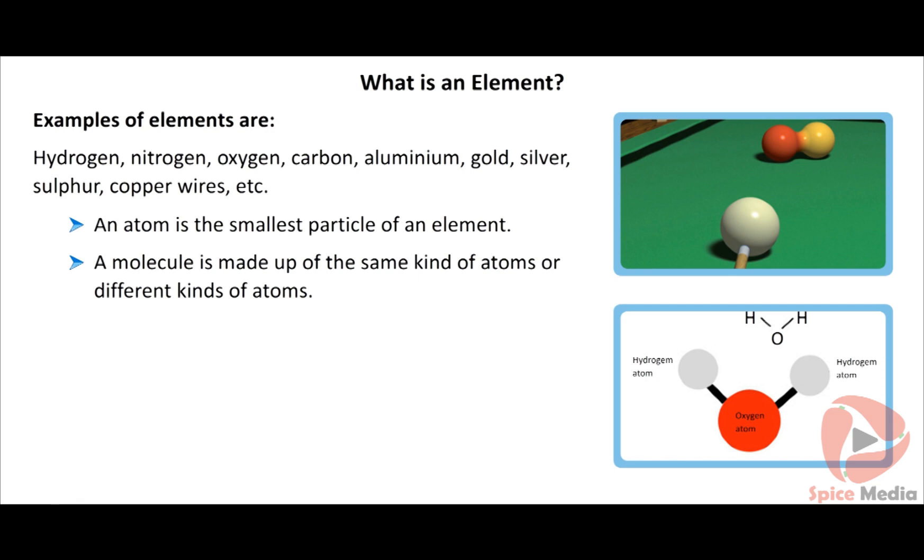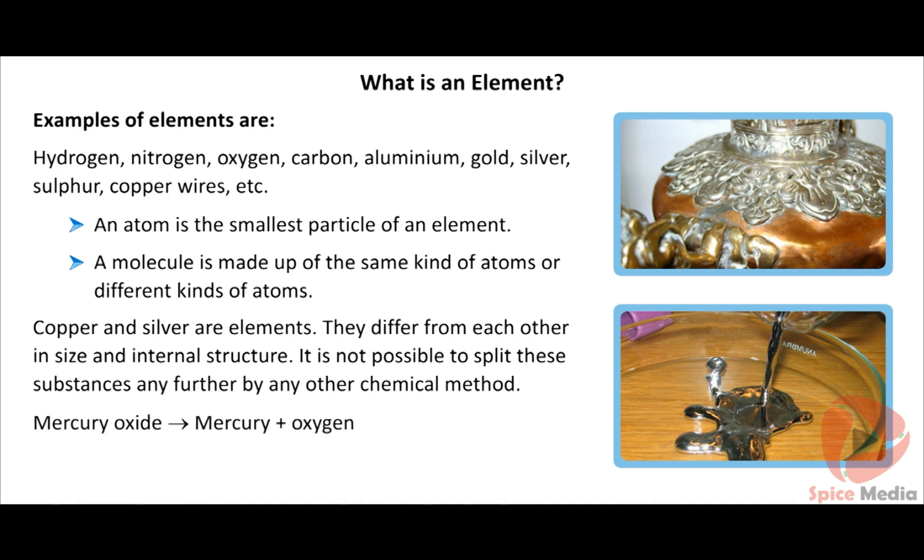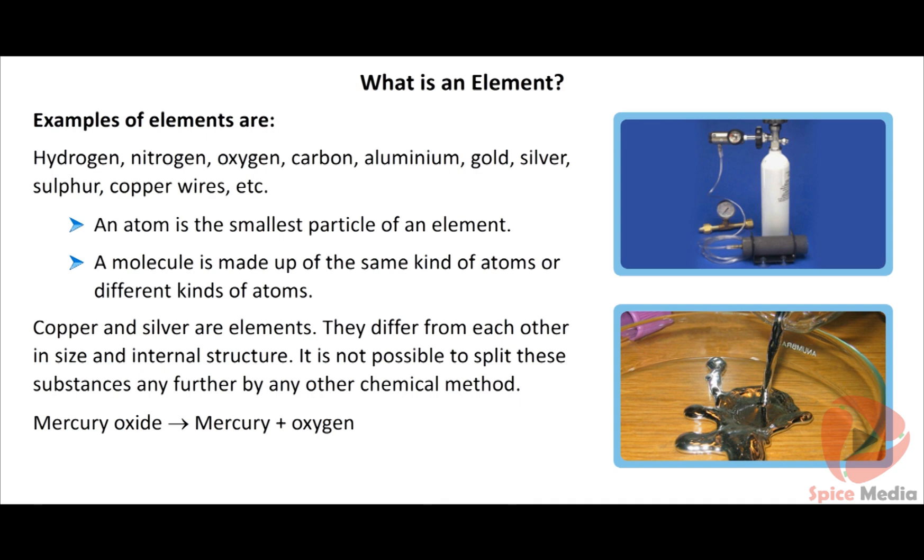All elements are made up of one kind of atom only. However atoms of different elements are not identical. Copper and silver are elements. They differ from each other in size and internal structure. A complex substance like mercuric oxide is broken down into simpler substances mercury and oxygen. It is not possible to split these substances any further by any other chemical methods.